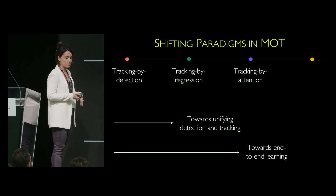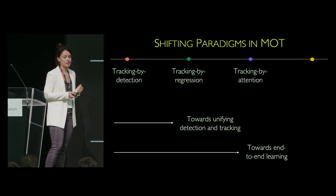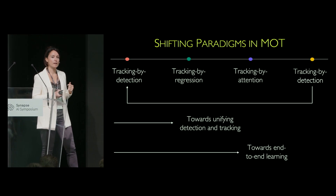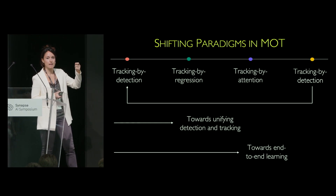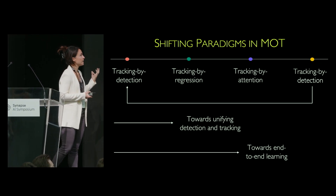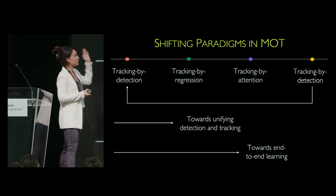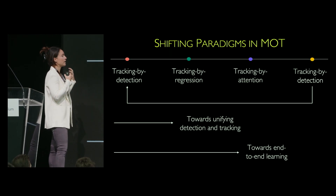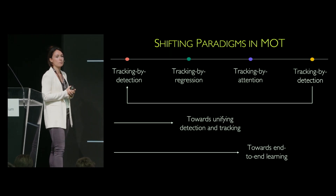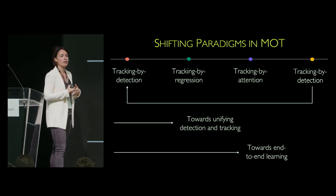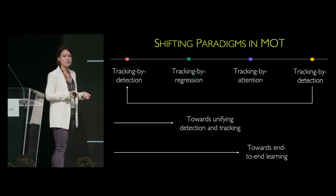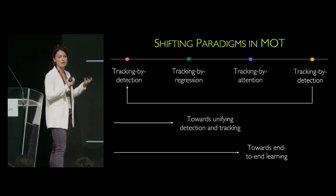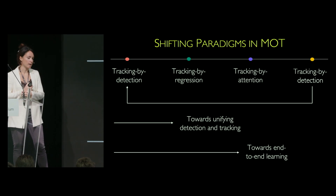There's a surprise at the end: we actually go back to tracking by detection and study how, with all that we've learned in machine learning and AI, we can make that super simple paradigm really strong — even better than end-to-end trainable paradigms.